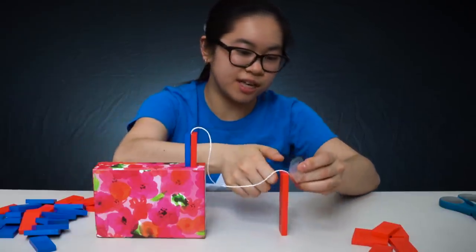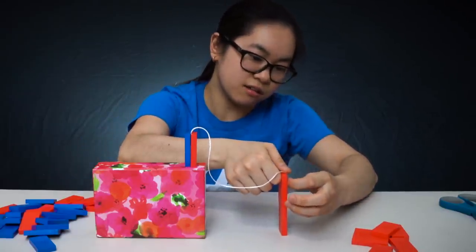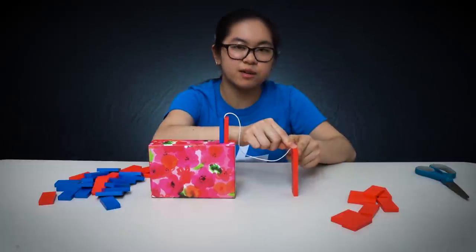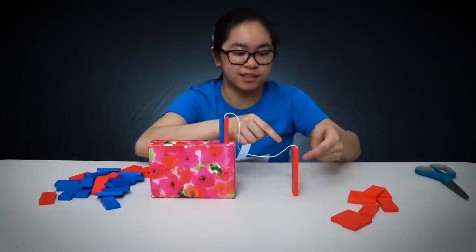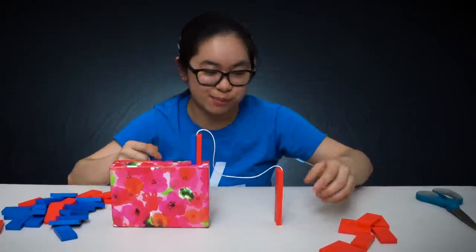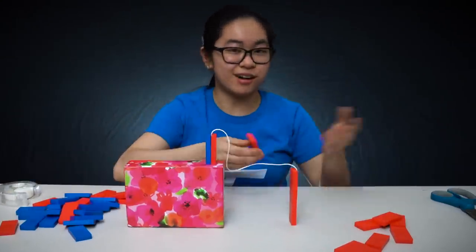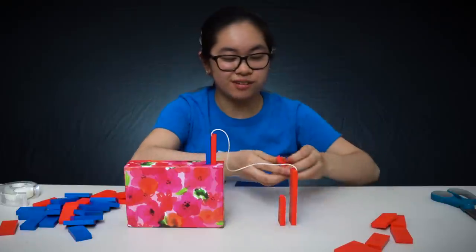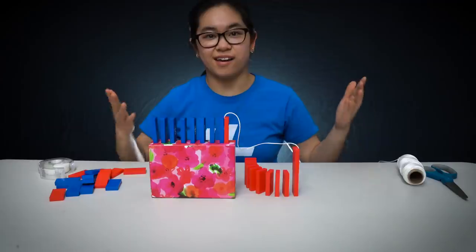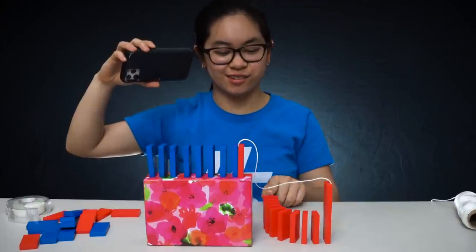Now we can tape the string on the opposite side. I recommend putting the tape on the opposite side right here, otherwise it could just rip off the tape. Wonderful, so now once you have that, it's really simple. You just add the domino line and there we have it.